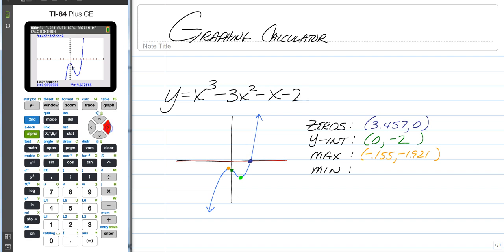Your calculator is going to ask you for a left bound first. So you go to just the left side of your minimum. Click enter. Move your spider to the right side. Click enter. And then go down to the bottom of the curve. Click enter one more time. And it will give you a minimum at 2.155 comma negative 8.079.